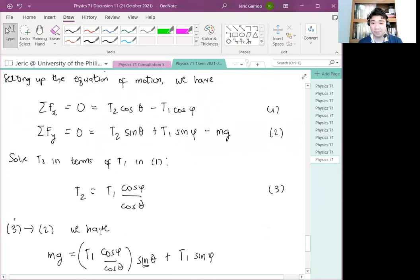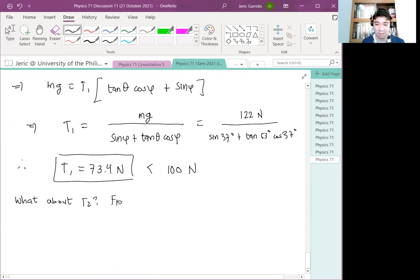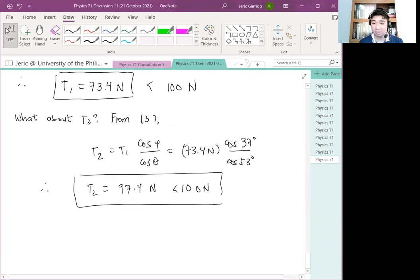Again, from equation one, from equation three, we have T2 equals T1 cosine phi over cosine theta, which is just 73.4 newtons multiplied by cosine 37 degrees over cosine 53 degrees. And hence, we get something like, therefore, T2 is equal to 97.4 newtons, which again is less than 100 newtons. So hence, in conclusion, the bottom line is both the two ropes will not break.